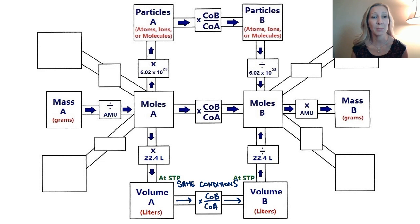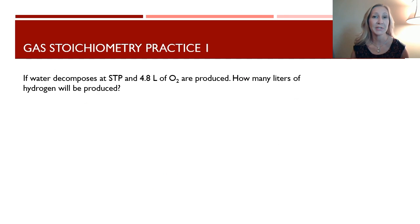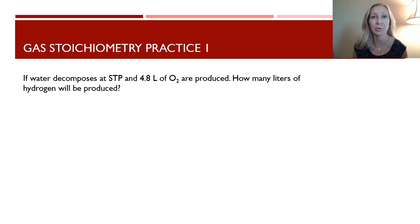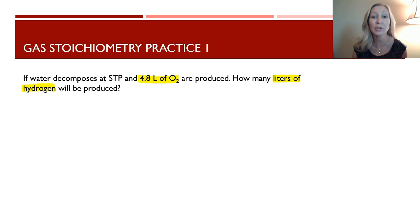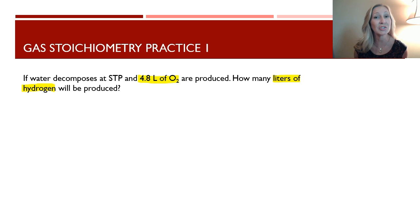Let's take a look at a sample problem: if water decomposes at STP and 4.8 liters of oxygen are produced, how many liters of hydrogen will also be produced? The first thing we need to do is identify what we're given — 4.8 liters of oxygen, which is a volume of a gas. We want to find the liters of hydrogen, which is also a gas, so we're going from the volume of one gas to the volume of another, and the conditions are not changing.